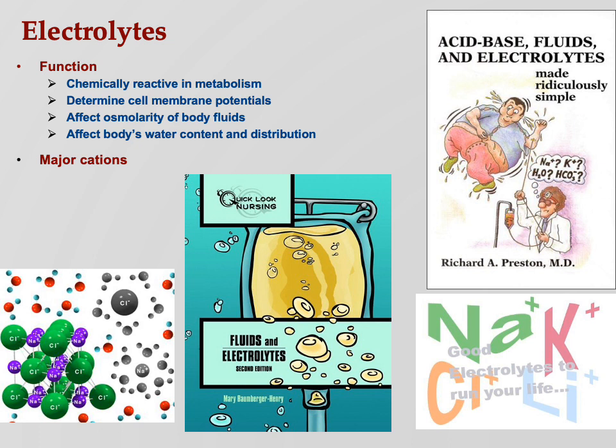Major cations: sodium, potassium, calcium, hydrogen. Sodium is the main cation of the extracellular fluid; potassium is the main cation of the intracellular fluid. Major anions: chloride, bicarbonate, and phosphate. Chloride and bicarbonate are extracellular; phosphate is intracellular. We covered all that on day one — this is just review, you should have this down solid by this point.